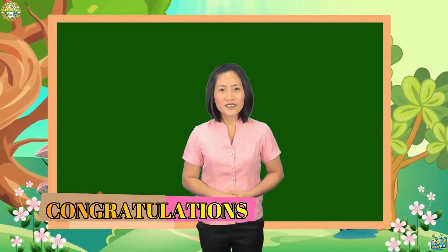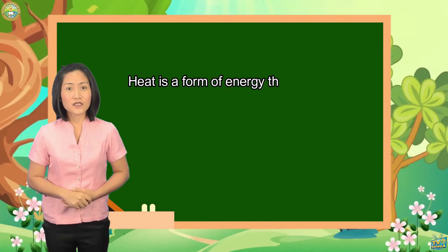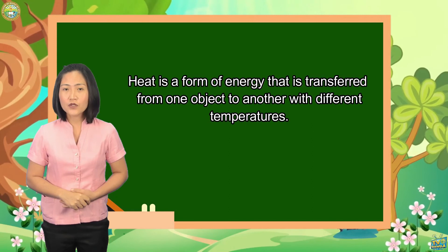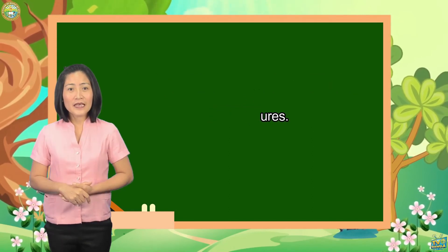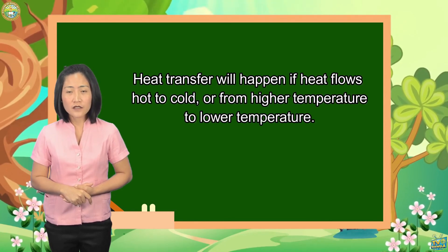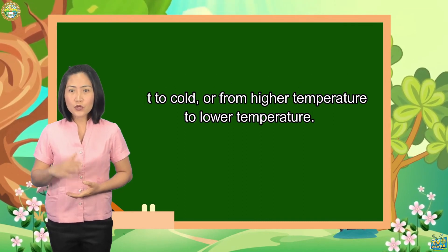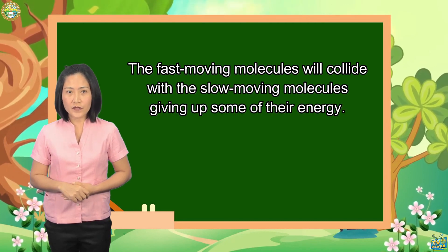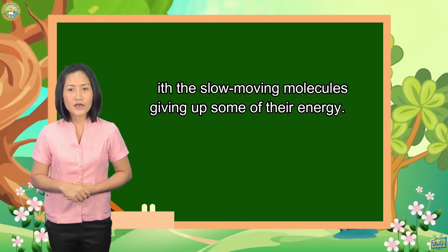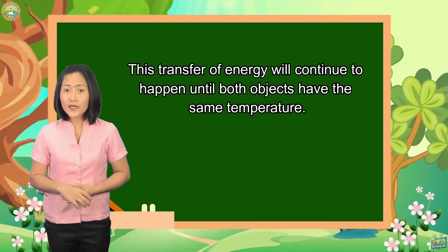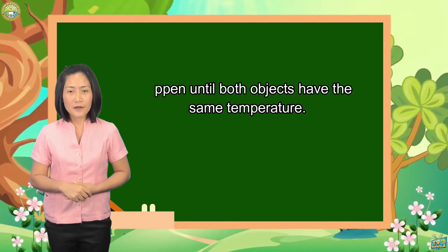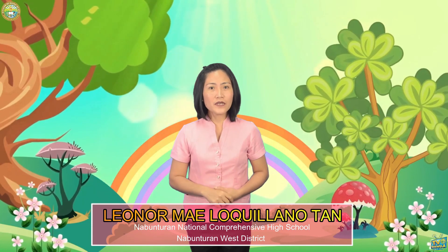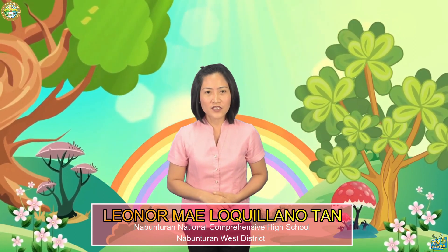Great job in performing your task. Take note of the following to help you summarize the concepts you have learned. Heat is a form of energy that is transferred from one object to another with different temperatures. Heat transfer will happen if heat flows from hot to cold, or from higher temperature to lower temperature. The fast-moving molecules will collide with the slow-moving molecules, giving up some of their energy. This transfer of energy will continue to happen until both objects have the same temperature. That ends our discussion for today. Once again, this is Teacher Lenorme Loquiliano Tan of Nabunturan National Comprehensive High School, Nabunturan West District.